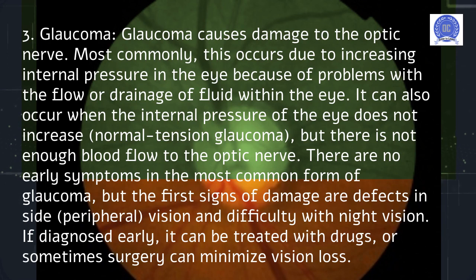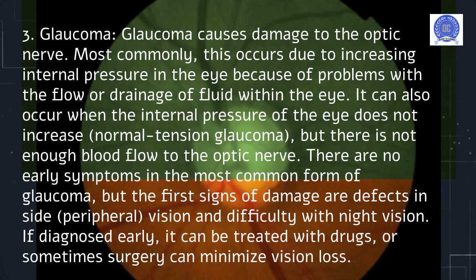Glaucoma causes damage to the optic nerve. Most commonly, this occurs due to increasing internal pressure in the eye because of problems with the flow or drainage of fluid within the eye. It can also occur when the internal pressure of the eye does not increase — normal tension glaucoma — but there is not enough blood flow to the optic nerve. There are no early symptoms in the most common form of glaucoma, but the first signs of damage are defects in peripheral vision and difficulty with night vision. If diagnosed early, it can be treated with drugs, or sometimes surgery can minimize vision loss.